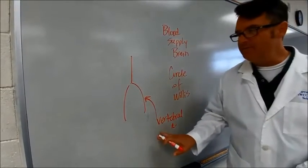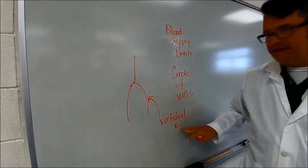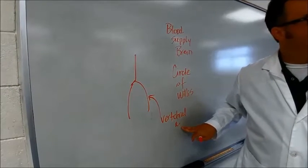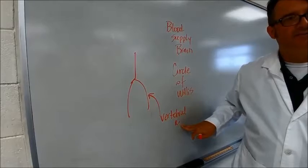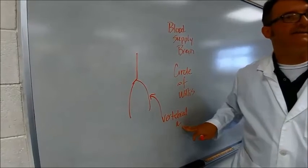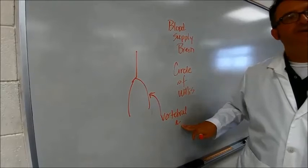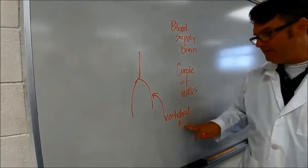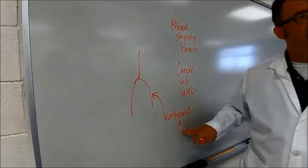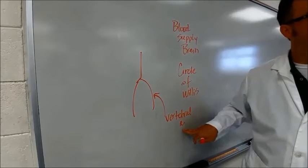And always remember that when we make a drawing, it has to have A to designate artery, V to designate vein, N to designate nerve, and M to designate muscle. If we don't have that, then it might get counted off. It's got to be perfect.